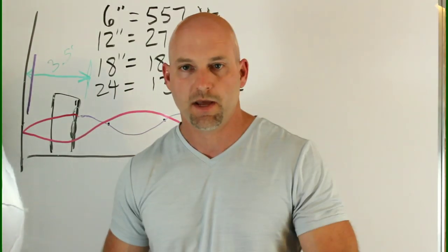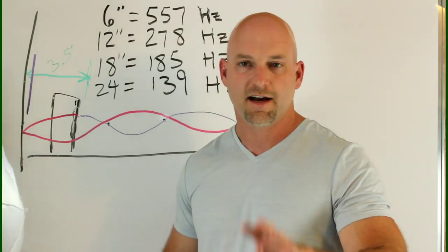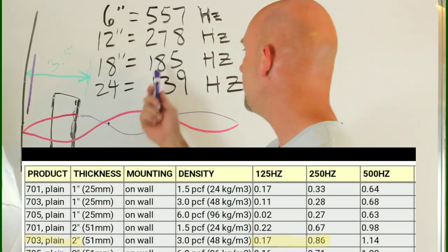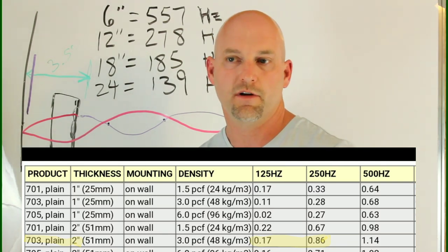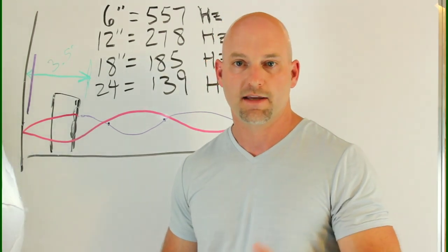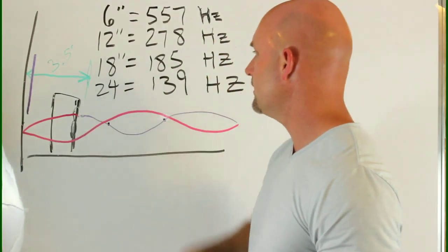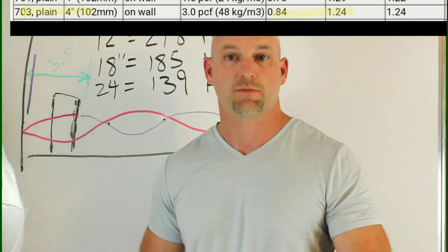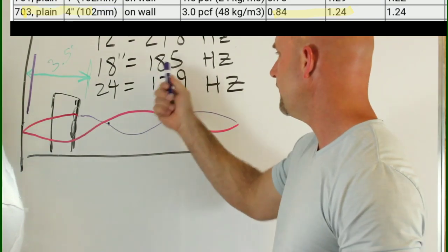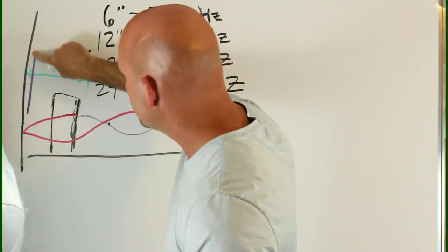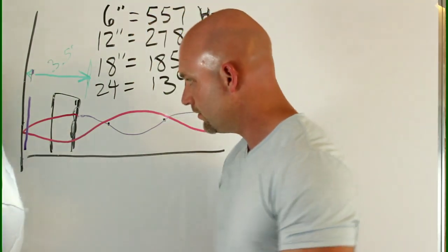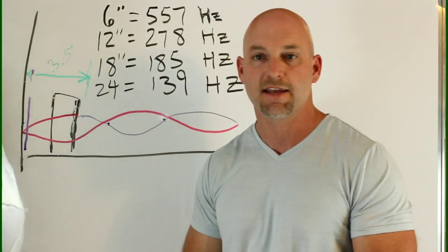At 18 inches and 185 Hz, a two-inch panel is borderline — at 250 Hz it's 0.86 absorption, but at 185 Hz you might be around 0.6, so it'll help a little but won't really make the problem disappear. We need to step up to a four-inch panel. The four-inch 703 panel is 0.84 at 125 Hz, so a four-inch panel placed right behind the drivers — not up in no man's land too high — would fix that issue at 18 inches off the wall.